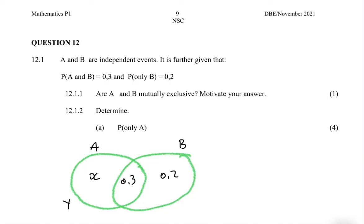Question 12.1.1 asks: are A and B mutually exclusive? Two events are mutually exclusive if they cannot occur at the same time — like tossing a coin: you cannot get both heads and tails simultaneously. In our case, the probability of A and B is 0.3, so they can occur at the same time. Therefore the answer is no — they are not mutually exclusive.